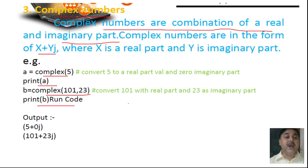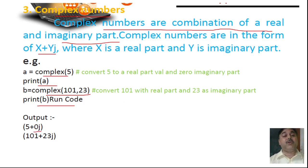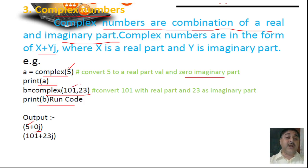When running the code, you find the imaginary number is working. You will ask why 0j is coming — because as soon as you write complex, it has two parts: x part and y part. The x part value given is 5, so 5 is printed. The y part value is not given, therefore the value of y is 0j — so 0 becomes the imaginary part. In complex(101, 23), 101 is the real part and 23 is the imaginary part.